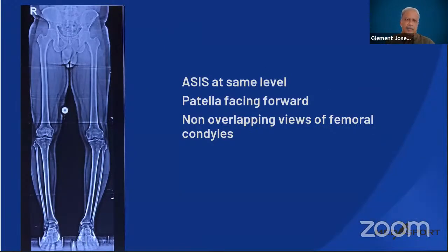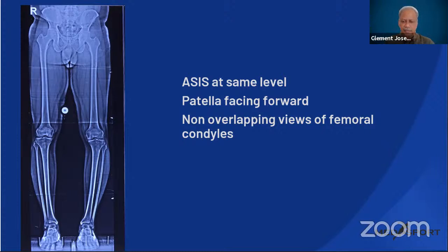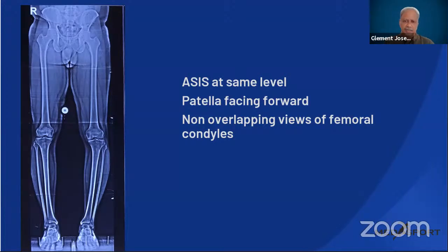Once you get a standing full-length X-ray, assess whether it has been taken properly. First, look at the anterior superior iliac spines — they should be at the same level. At the knee, the patella should be centered and facing forward, and the femoral condyles should be clearly visible without overlapping on the tibia. This X-ray is critical because the entire surgical planning and execution of the osteotomy depends on it.